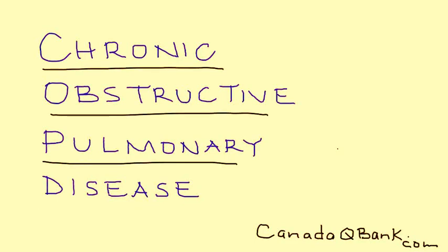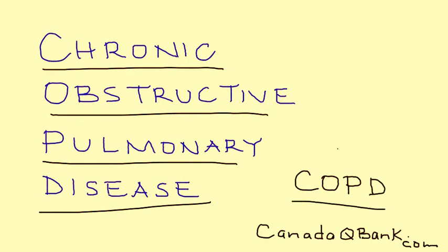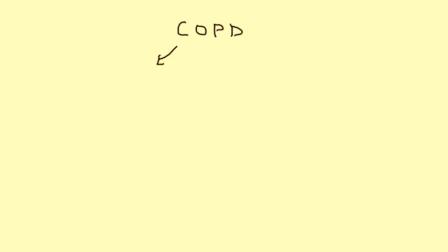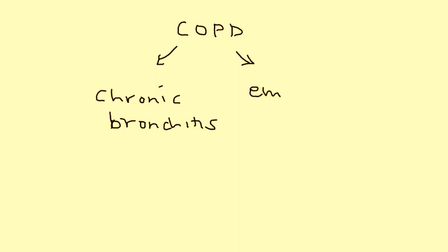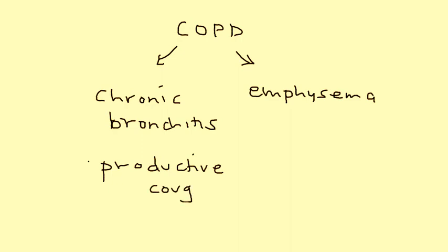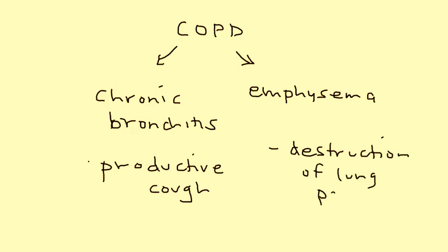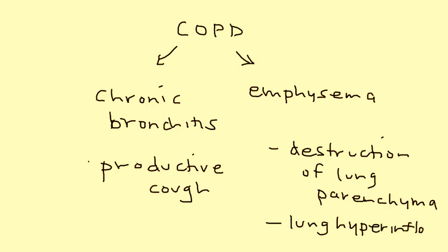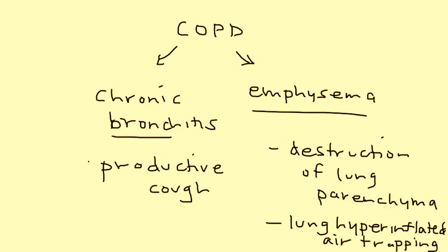Chronic obstructive pulmonary disease, or COPD, is the topic. COPD essentially comprises two components: there's chronic bronchitis and there is emphysema. Chronic bronchitis is essentially a presentation of productive cough on a chronic basis, whereas emphysema is talking more about the destruction of the lung parenchyma, which over time can cause the lung to be hyperinflated due to air being trapped inside.